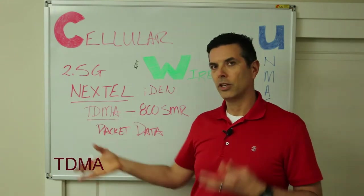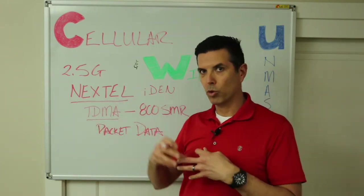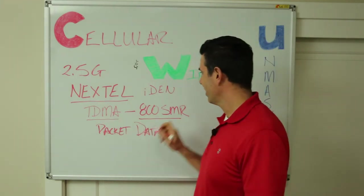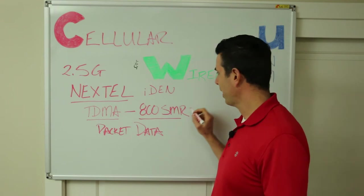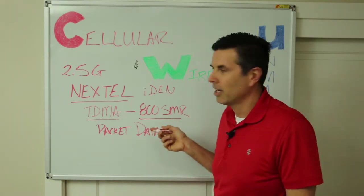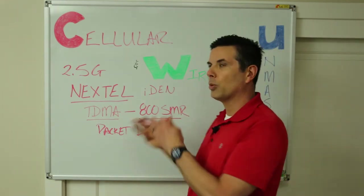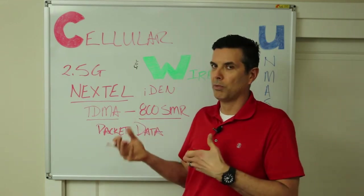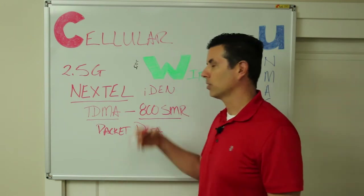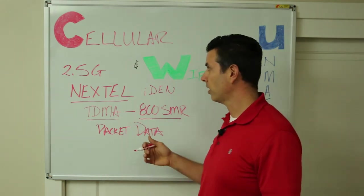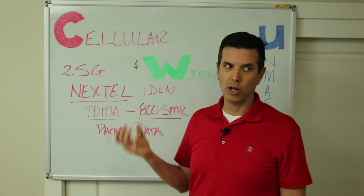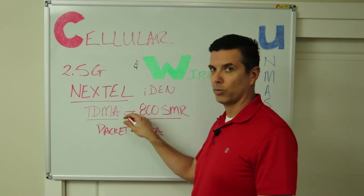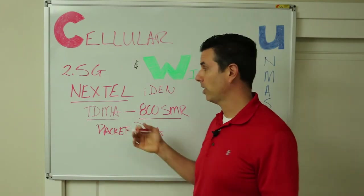They used TDMA, Time Division Multiple Access, to make their channels multiplex to bring more people into each channel. It was on the 800 megahertz SMR band, specialized mobile radio. Nextel integrated that two-way radio with mobile telephony and allowed you to have a cell phone which also behaved like a walkie-talkie. It was novel for the time. Nextel struggled with their growth because the TDMA technology was kind of an old technology and very sensitive to interference.